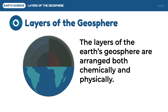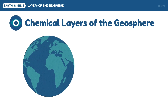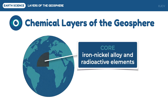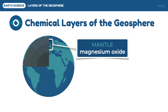Let us first discuss the chemical layers of the geosphere. Starting from the centermost chemical layer, we have the earth's core. This layer is mostly made up of iron with a significant percentage of nickel and other radioactive elements. It also includes lighter elements such as sulfur, oxygen, carbon, and hydrogen.